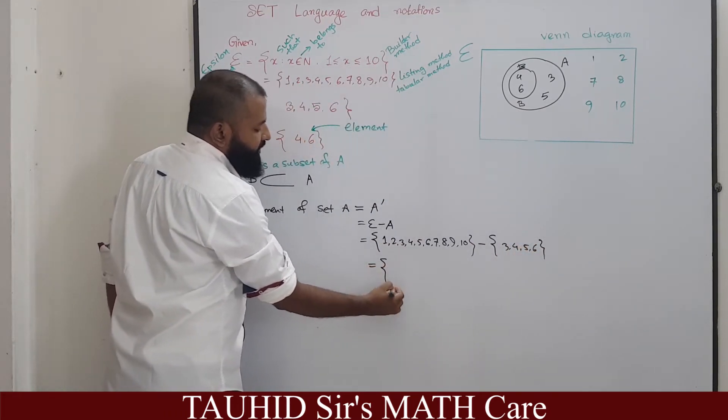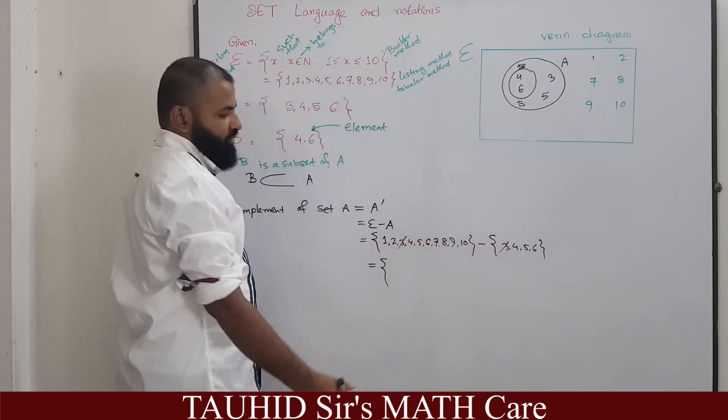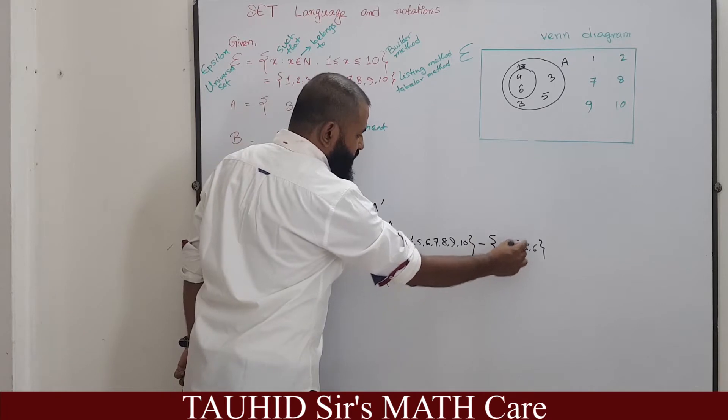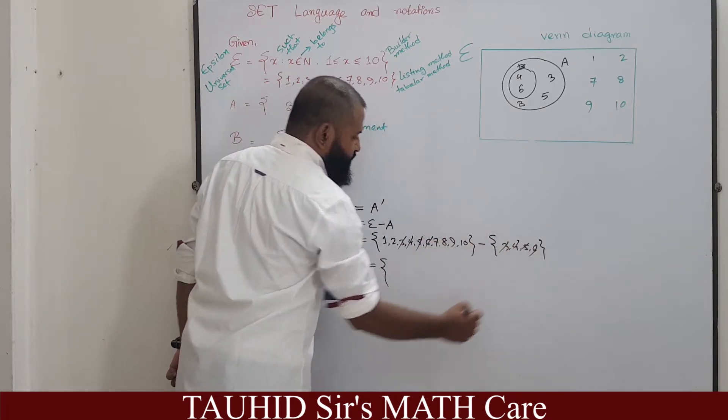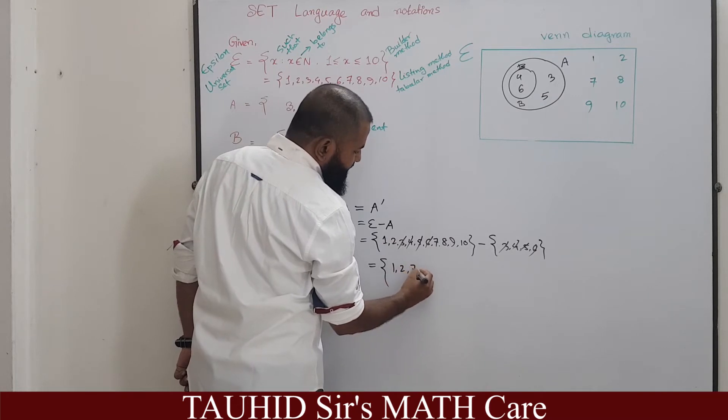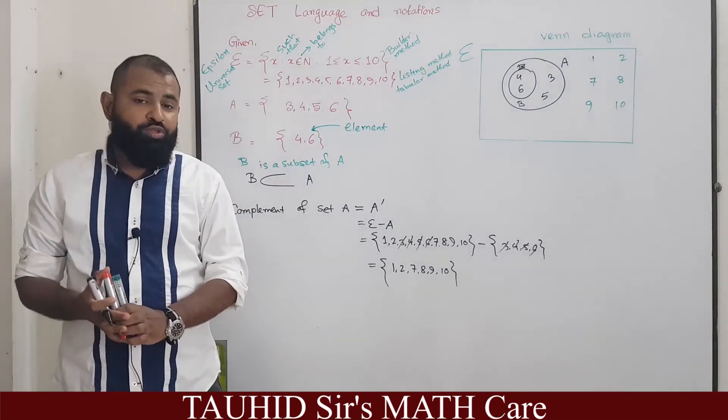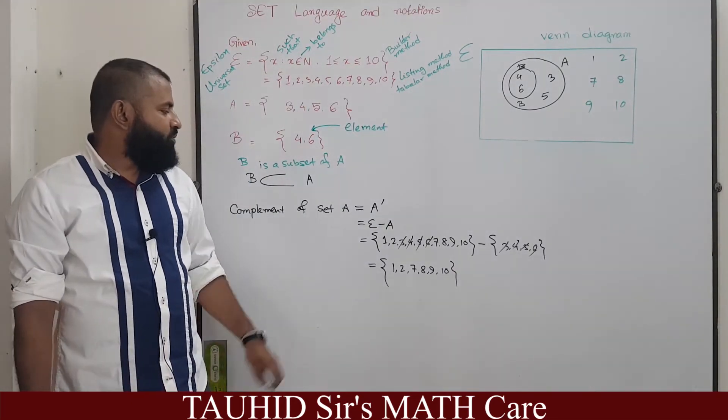So what are the remaining? 1, 2, 7, 8, 9, 10. This set whose members does not match with the members of A is called complement of A or A complement or A prime.